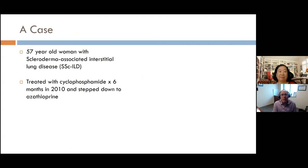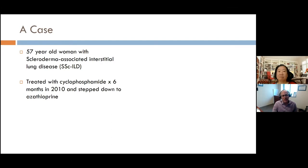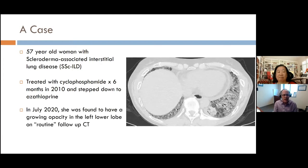I find it helpful to anchor our talk around a case. This is a 57-year-old woman with scleroderma-associated interstitial lung disease. She was treated with cyclophosphamide — a really aggressive therapy for scleroderma ILD that can work very well, but does have associated risks, particularly late cancers being one of them. She did very well back in 2010 and was stepped down to azathioprine. About 10 years after her cyclophosphamide treatment, she came to the ILD clinic and was found to have a growing opacity in the left lower lobe on routine follow-up CT.